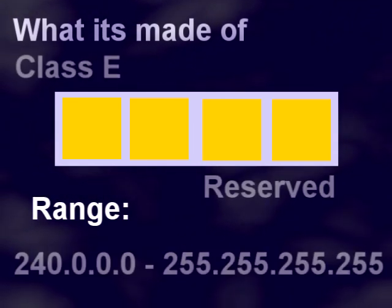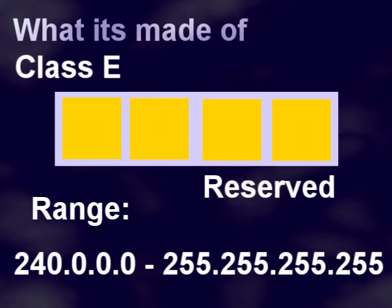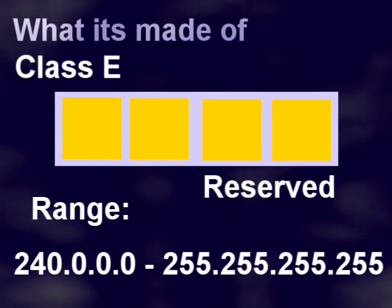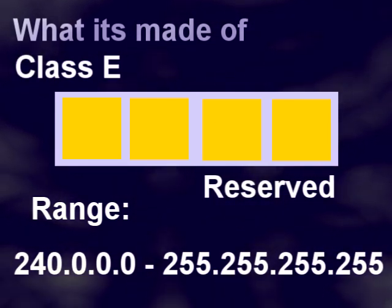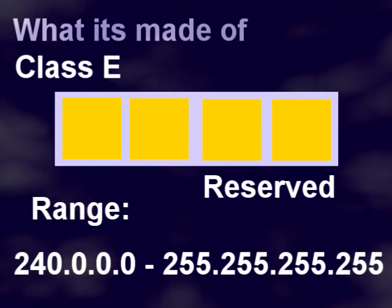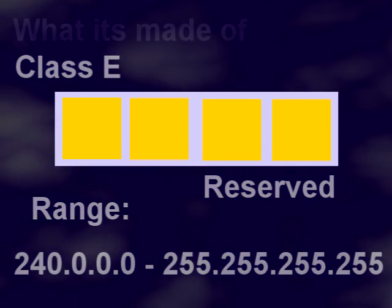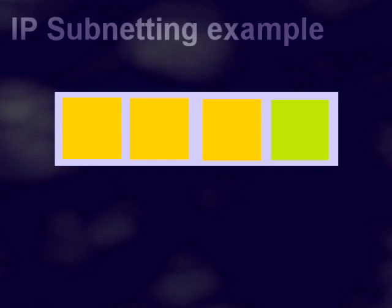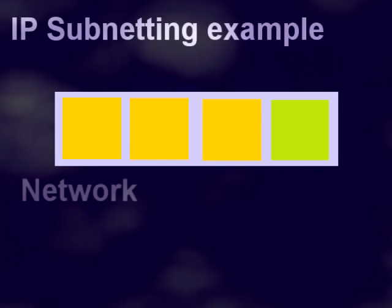Class E is a reserved group of addresses for experimentation and possible further allocations. It can have a range of 240.0.0.0 to 255.255.255.255.